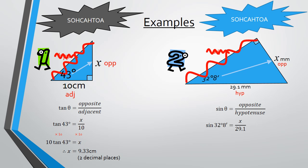Sin theta equals opposite over hypotenuse. Replacing everything we know. Sin 32 degrees 8 minutes equals x over 29.1. To solve this, we multiply both sides by 29.1. Which gives us 29.1 sin 32 degrees 8 minutes equals x. If we type that in the calculator, we get x equals 15.48 correct to two decimal places.